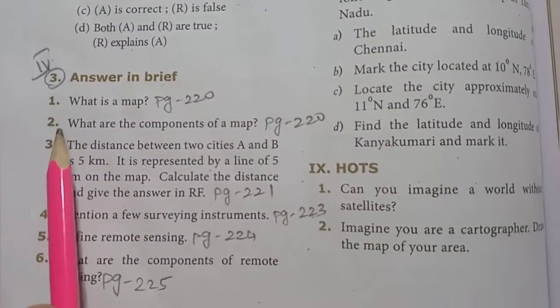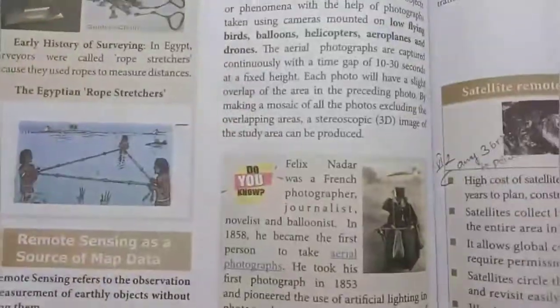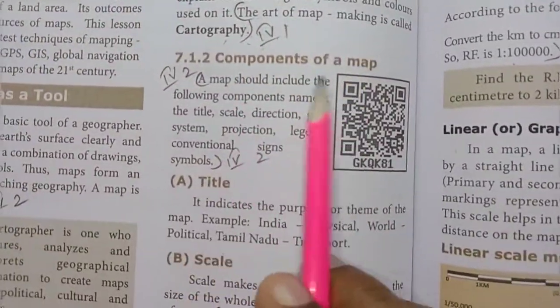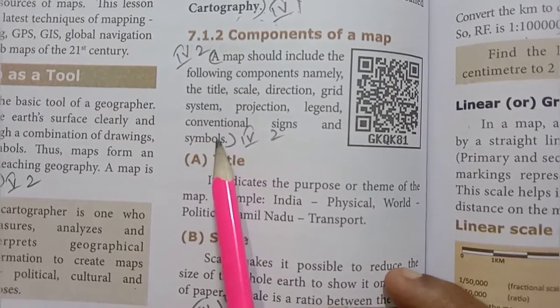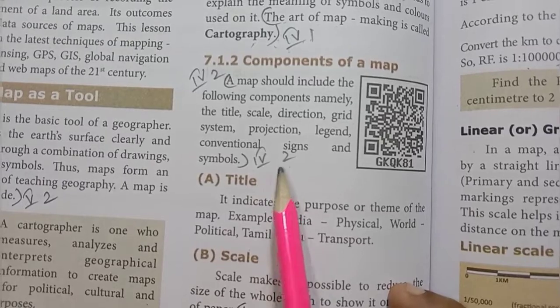Fourth Roman numeral, second one. What are the components of a map? Page number 220. Components of a map, there is 6 lines. Map should include symbols. Fourth Roman numeral, second one answer.